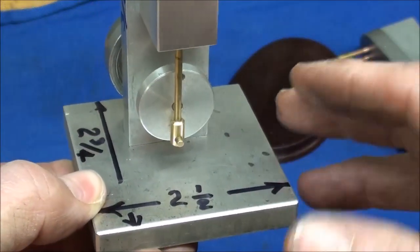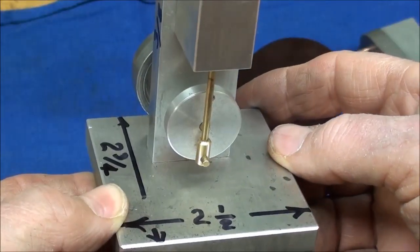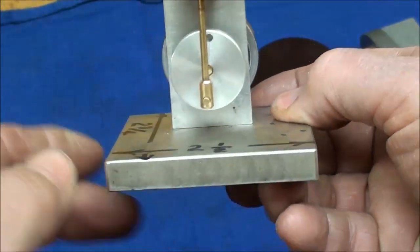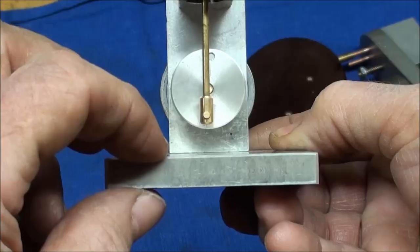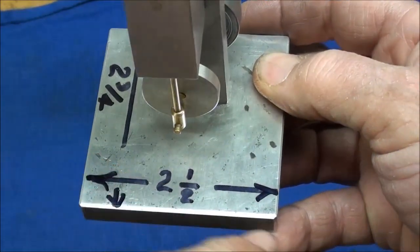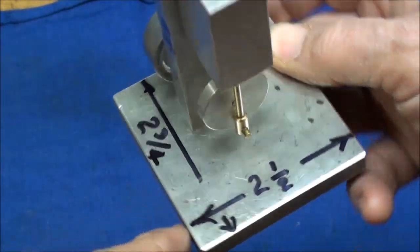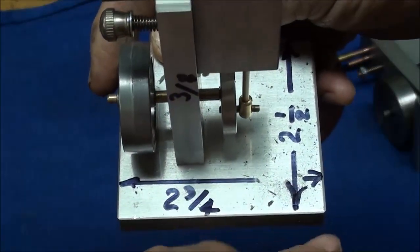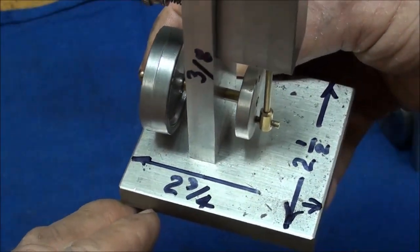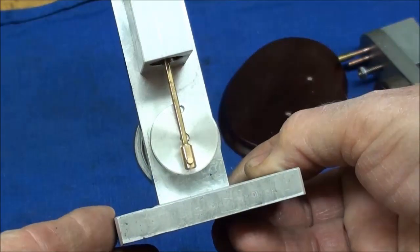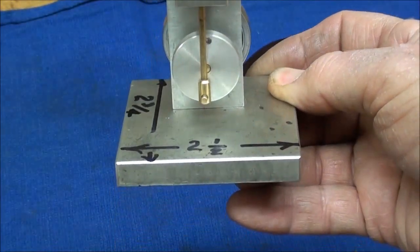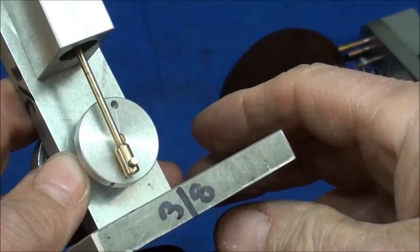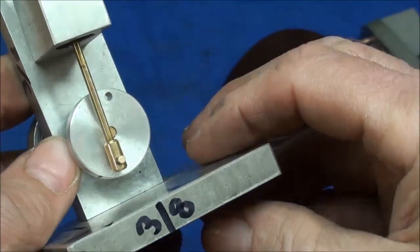And the dimensions for that are as follows: this is aluminum, matter of fact almost everything is aluminum or brass except for the flywheel. And this is three-eighths thick, but it could be half inch, and it's two and a half wide by two and three-fourths long. And again those dimensions can vary, whatever you got or whatever looks proportional to you.